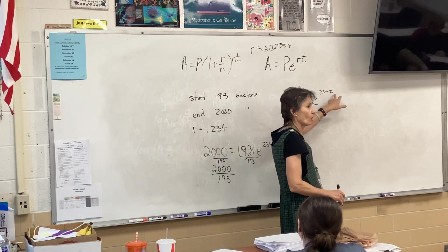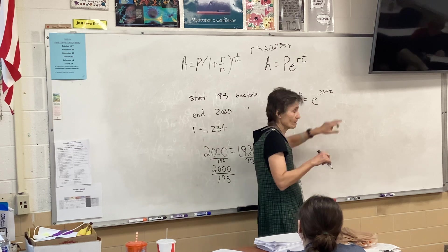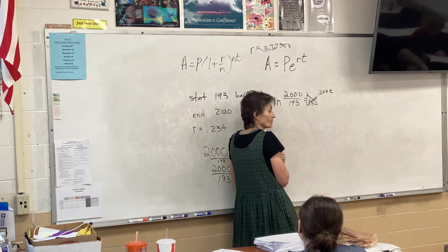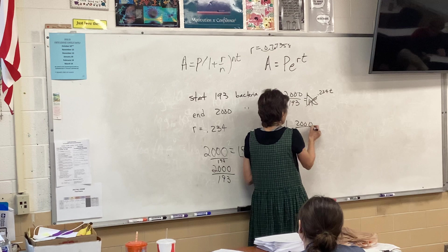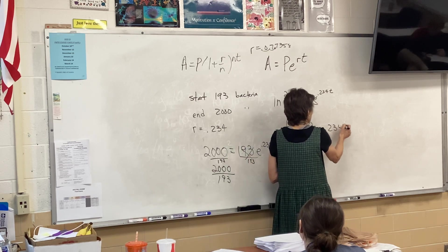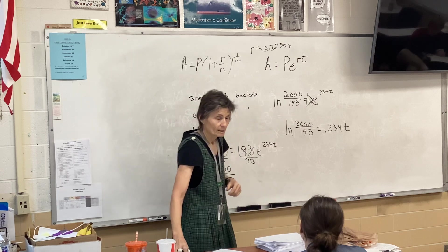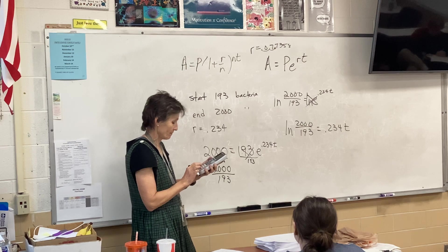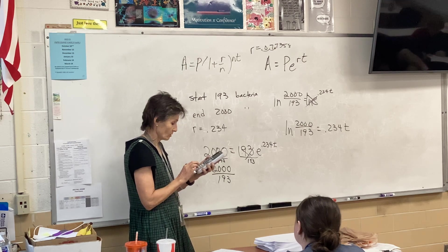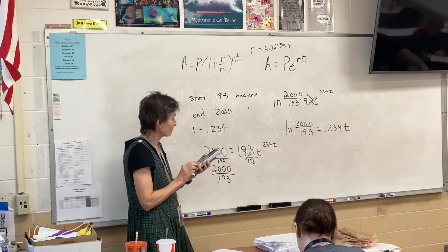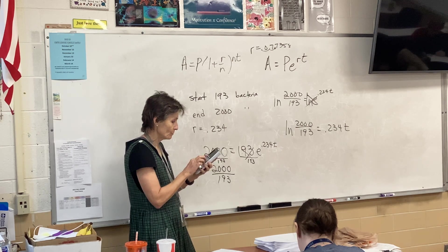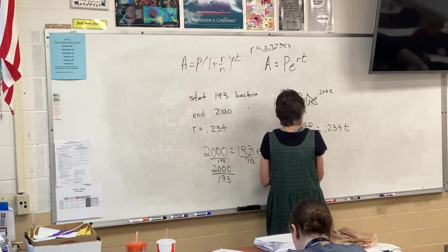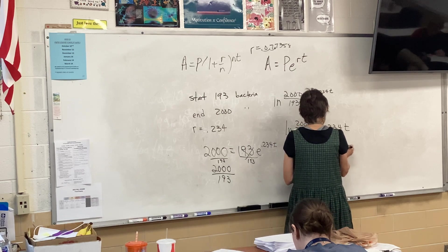Because the problem has an E in it, as PERTs do, I will LN both sides. The only way, the only way to find T is to use a logarithm. So, I'm going to use the base E logarithm, so that, that will cancel. So, LN, 2,000 divided by 193, equals 0.234T. And then, regular equation, how do I get T by itself? Divide. Divide. So, I take the logarithm, close the parentheses, divided by 0.234. And, I got 9.992 years.